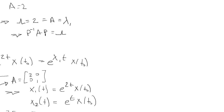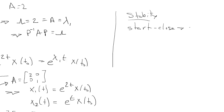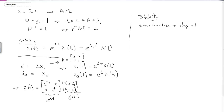Our notion of stability — starting close, staying close — means we want that given some finite initial condition, these exponential functions either grow, decay, or remain constant with time.